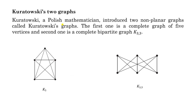Now, two important graphs — these two graphs are non-planar graphs. Kuratowski, a Polish mathematician, introduced these two graphs: one is K5, the complete graph of five vertices, and another is the complete bipartite graph K33.